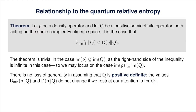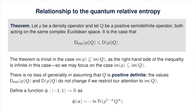In this case, nothing is lost if we assume that q is positive definite, because the values of both the min-relative entropy and the ordinary relative entropy don't change if we restrict our attention to the image of q. Next, let us define a function phi from the open interval negative 1 to 1 to the real numbers, as phi of alpha equals negative 1 times the natural logarithm of the trace of rho to the power 1 minus alpha times q to the alpha. We're using the natural logarithm because we'll use some basic calculus in the proof.